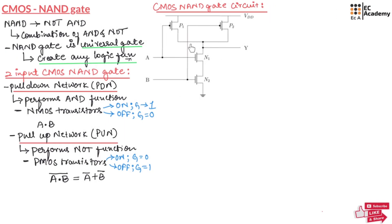This figure shows a CMOS NAND gate circuit. Looking at the circuit, we have two PMOS transistors connected in parallel and two NMOS transistors connected in series. Both transistors take inputs A and B. The output Y connects to VDD through the PMOS transistors and connects to ground through the NMOS transistors.